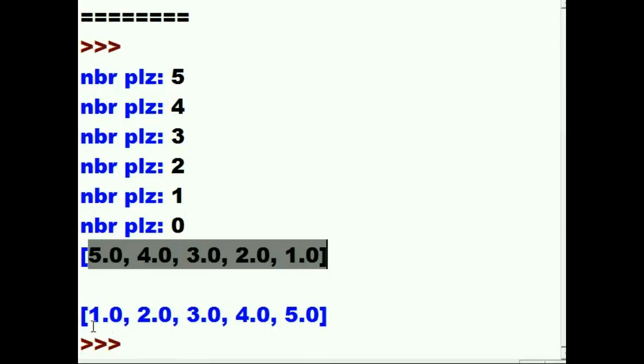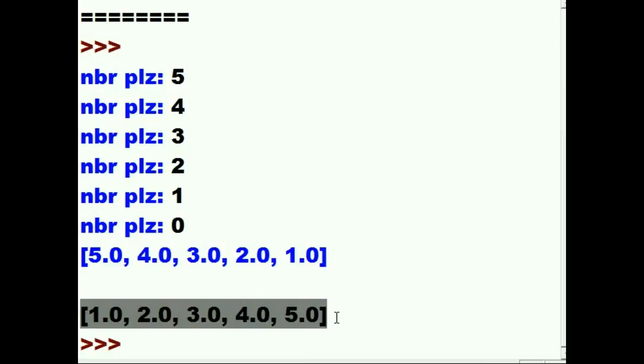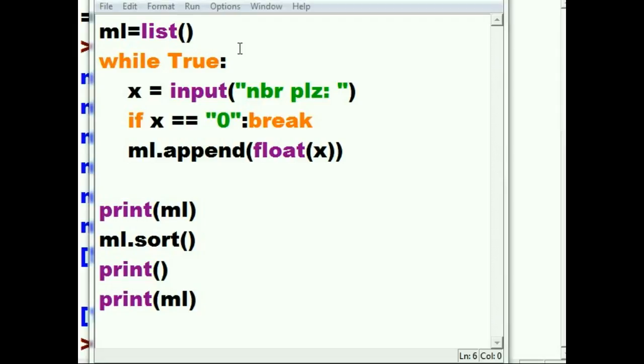And then it sorted it, printed a blank line, and prints out the sorted array: one, two, three, four, five. It worked. So let's look at the code one more time, make sure we understand it.